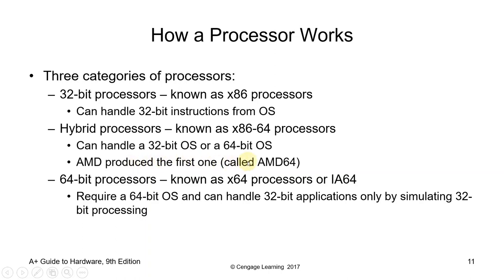The type of processor a computer has affects overall performance and dictates what type of software it uses. The 32-bit processor was the primary processor used in all computers until the early 1990s — Intel Pentium and early AMD processors were 32-bit, meaning operating systems and software work with 32-bit-wide data units. Windows 95, Windows 98, and Windows XP are all 32-bit operating systems.